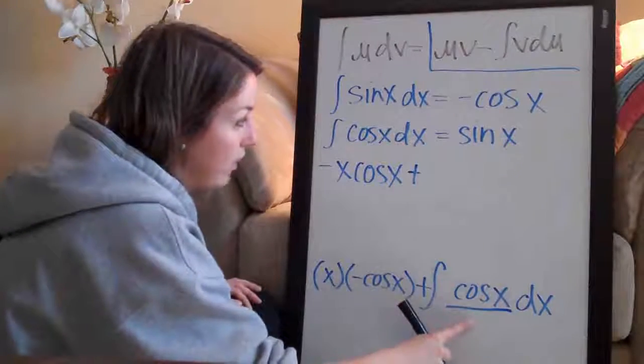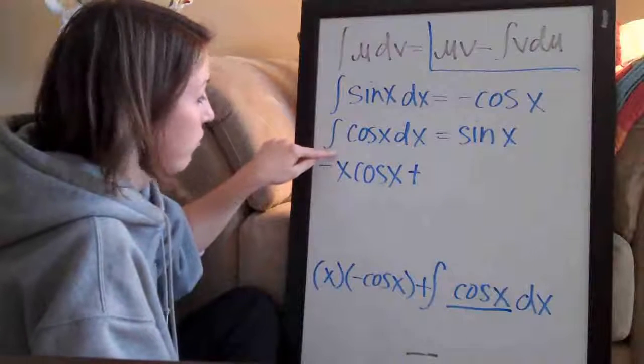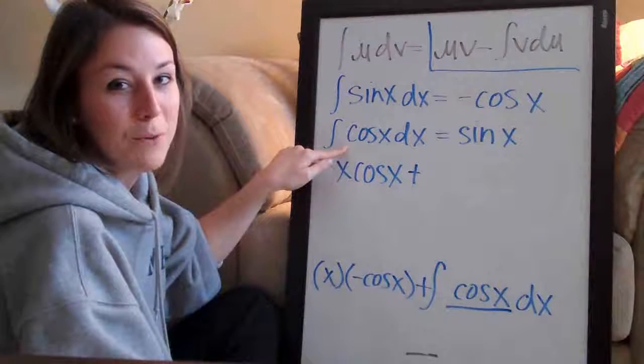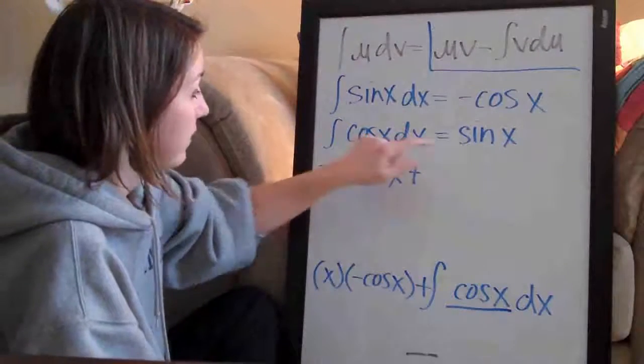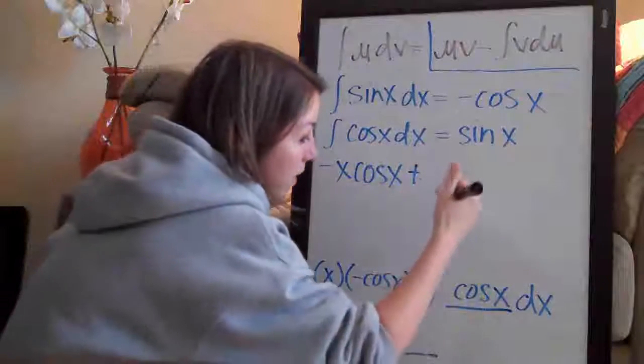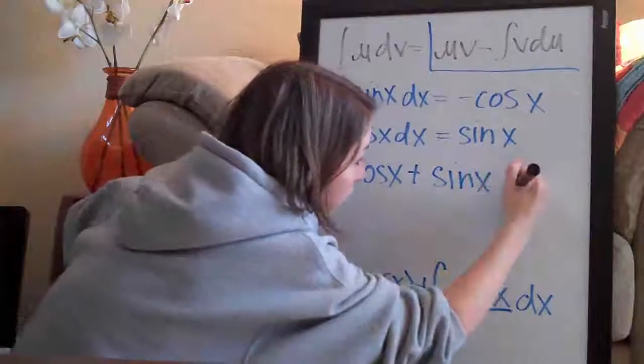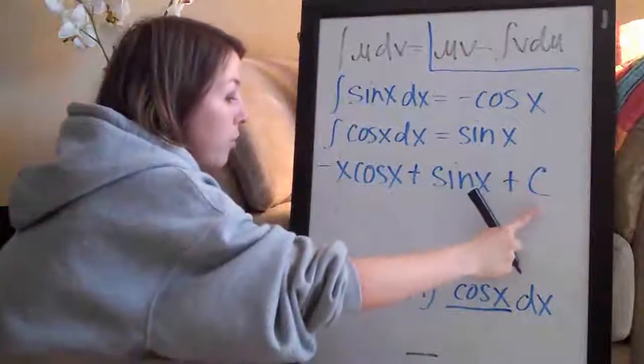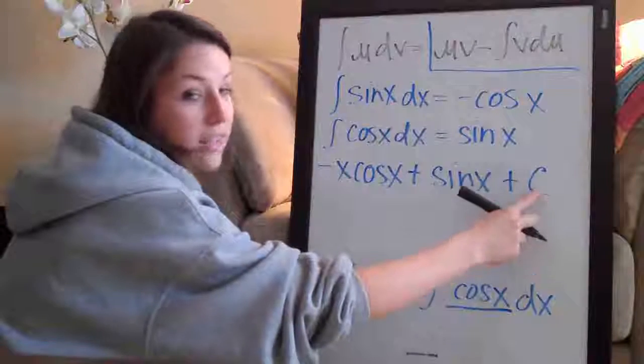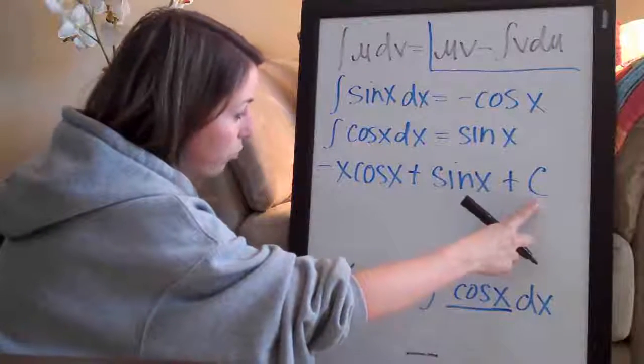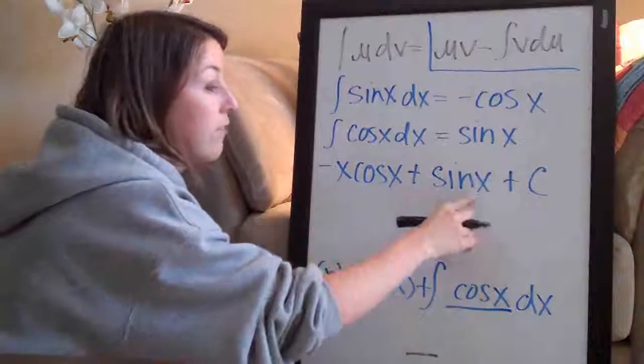And we have the integral of cosine of x which, remember I told you we would need this formula. And this is just another formula to either plug into your calculator or put on your cheat sheet or memorize if you have to, if your professor makes you. But, the integral of cosine of x is sine of x. So, we can write sine of x and then of course, that's the whole integral. We always have to put plus c because whenever we take an integral, we always have to account for a constant and that's what the c is acting as a placeholder for. And that's actually our final answer. Negative x cosine of x plus sine of x plus c.